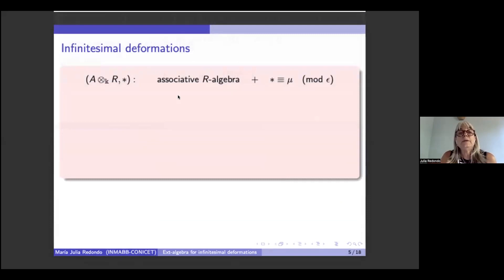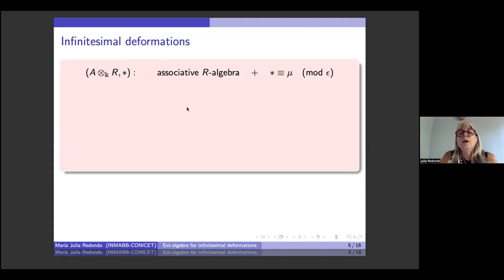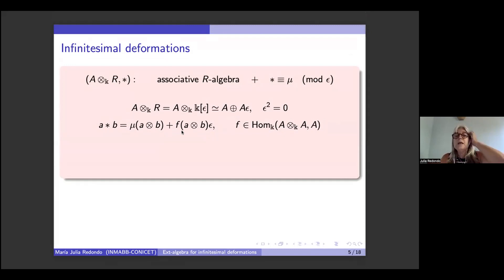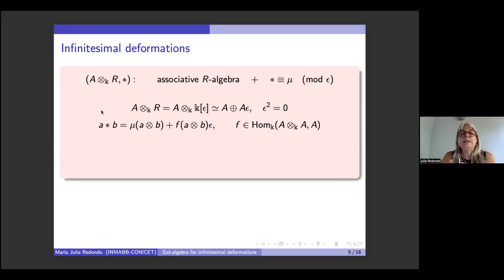This R-module is isomorphic to A plus A-epsilon. To define an R-algebra structure, we just have to define what is A star B for any pair of elements in A — something in this direct sum. We also want star to be equivalent to mu modulo epsilon. So the equation for the star product is that it has to be mu of A tensor B plus some F, where F is a k-linear map from A tensor A to A.